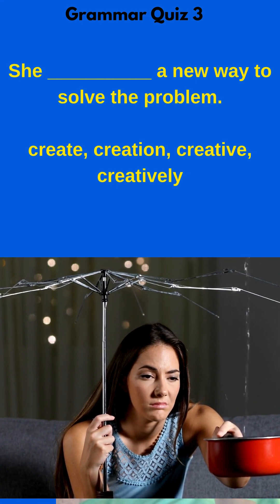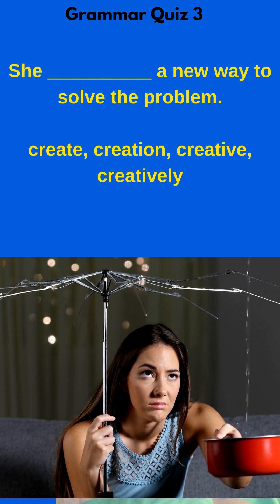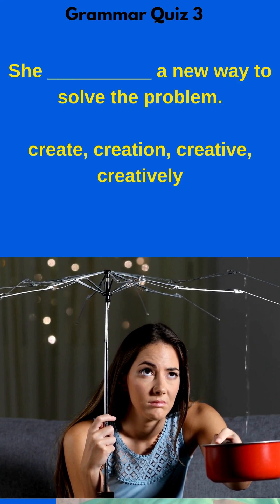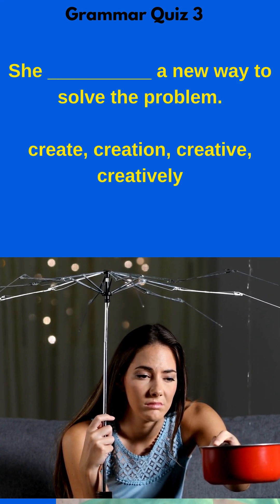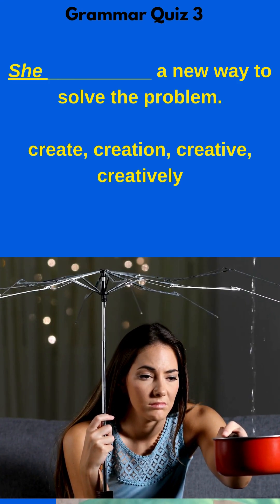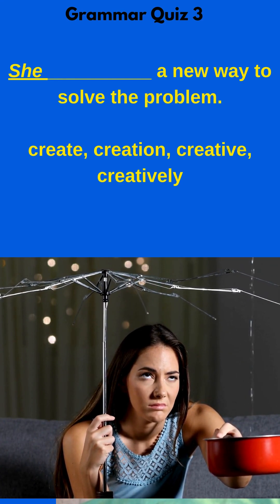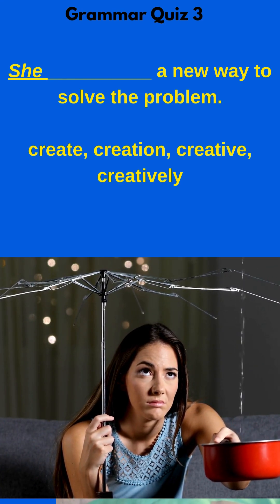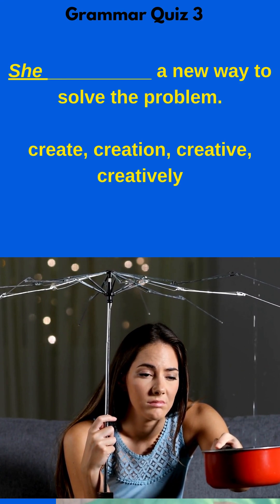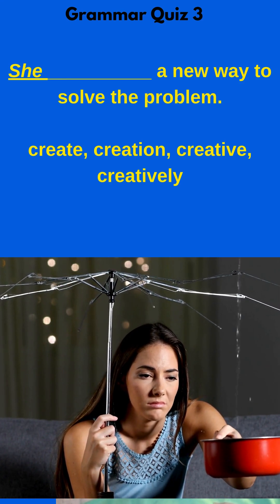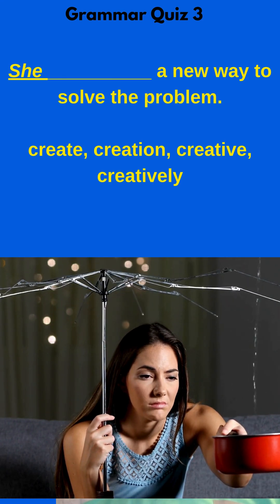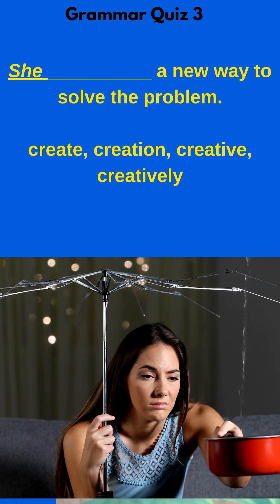Fill in the blank with the correct part of speech. She blank a new way to solve the problem. In that sentence, I see the word 'she,' and that's a pronoun, and that could be the subject. And then I see 'a new way,' which is a noun, and I think, man, I need a verb between those two nouns. So the verb form is 'create.'